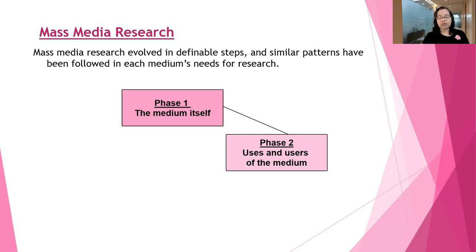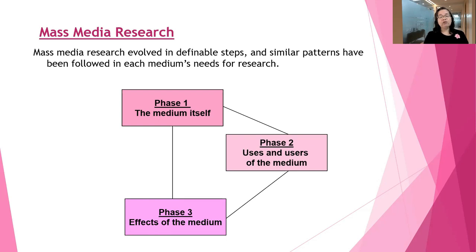The third phase of research development looks at the effects of the medium. This investigates the socioeconomic, psychological, and physical effects of the medium. How much time do people spend with the medium? Does it change people's perspectives about anything? What do users of the medium gain from it? Are there any harmful effects? How does it help people? So basically, it looks at the effects of the medium on the journalist's audience. It can also look at the effects of the medium on the journalists themselves.